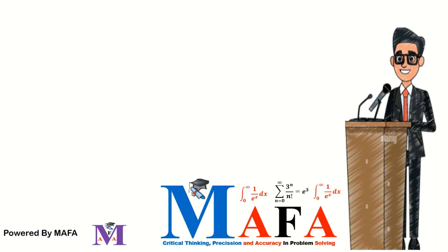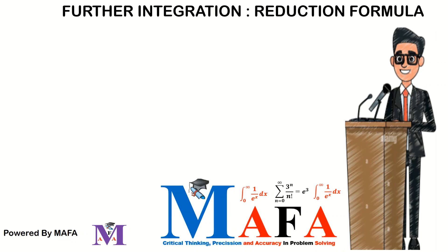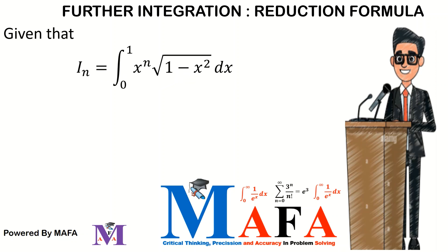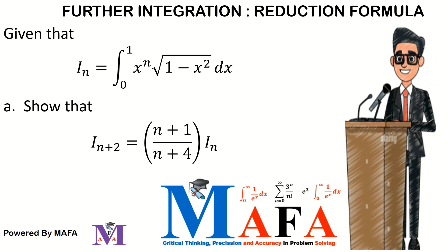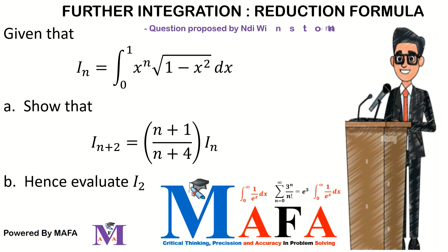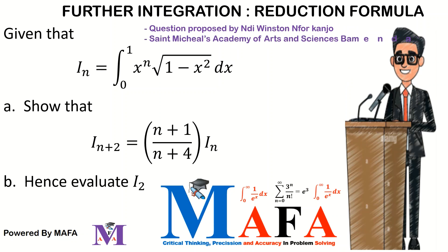In this video we are going to be looking at a question on further integration. The question reads: given that I(n) is equal to the integral from 0 to 1 of x to the n times the square root of 1 minus x squared dx. Part A: show that I(n+2) is equal to (n+1)/(n+4) times I(n). Part B: hence evaluate I(2). This question was proposed by a student at St. Michael's Academy of Arts and Sciences in Bamenda.